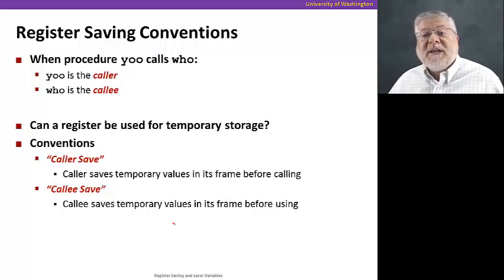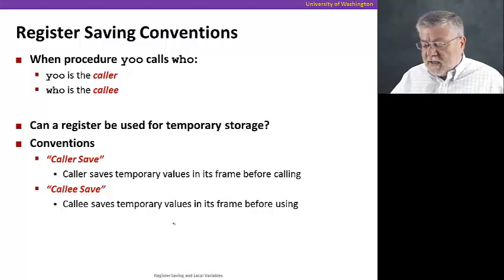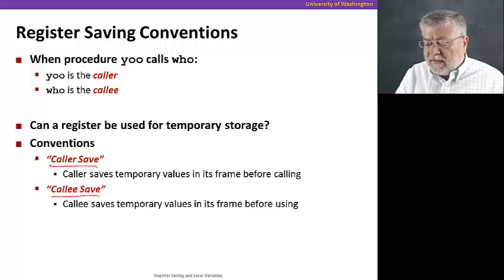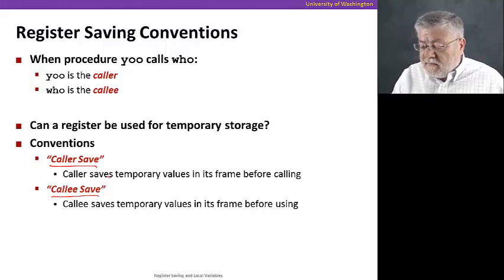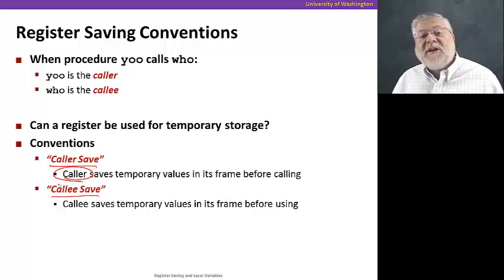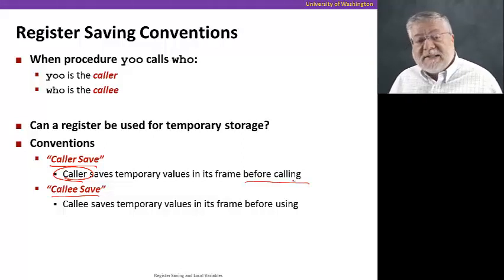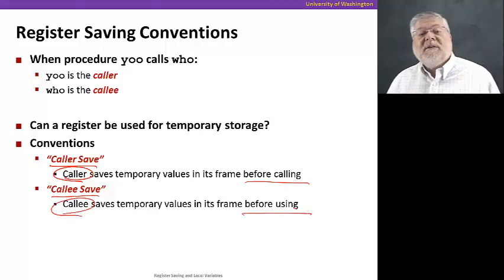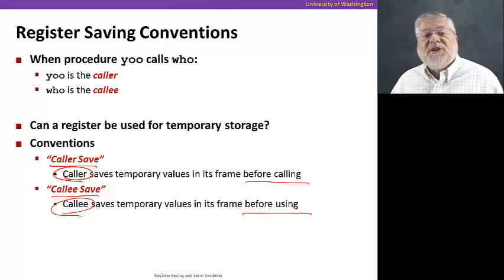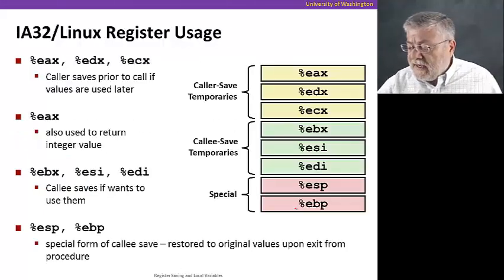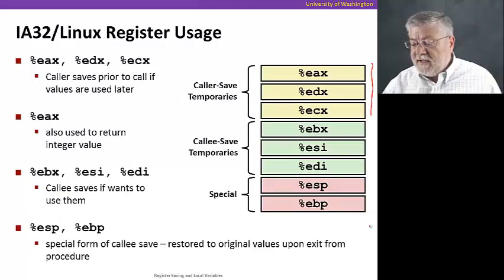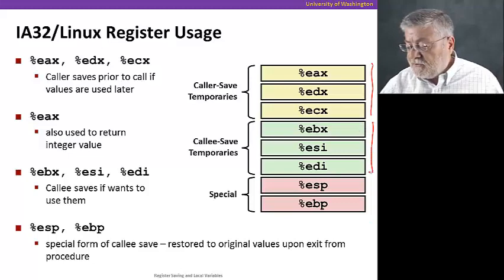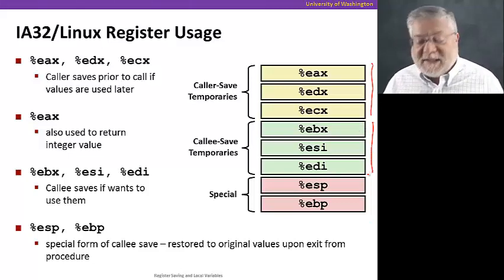So what we have is some register saving conventions that are split between caller save and callee save. In the caller save case, the caller procedure saves the values in the registers before calling the other procedure. Callee save is complimentary. It says the callee will do the saving before using that register. So when do we use each? When does the caller save a register and when does the callee save a register? So it turns out that what we're going to do is have three registers be caller save, EAX, EDX, and ECX, and three registers be callee save. Sort of split the responsibilities.